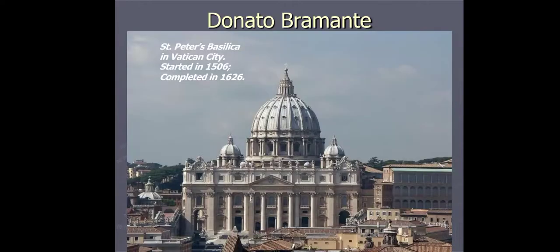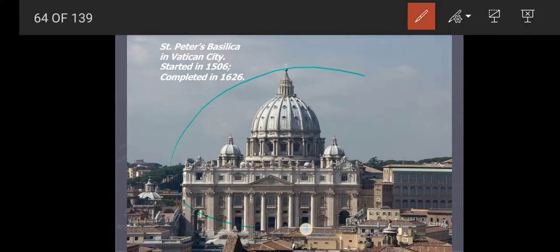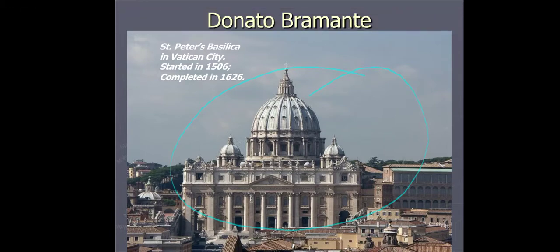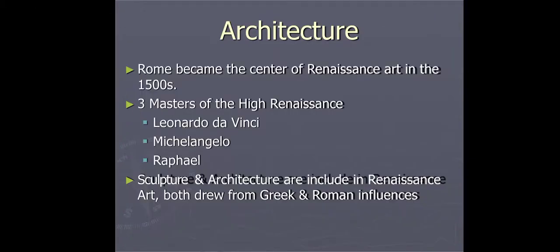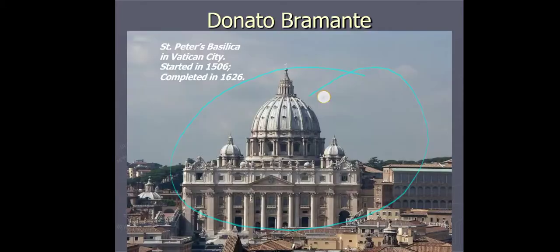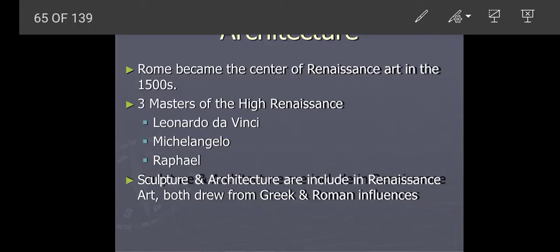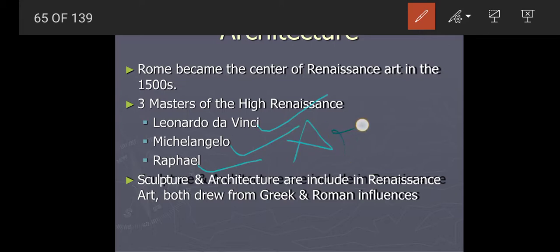Look at the picture — how beautiful it is. Architecture: Rome basically became the center of Renaissance art in the 1500s. The three masters of the High Renaissance were Leonardo da Vinci, Michelangelo, and Raphael. These are the famous artists. Sculpture and architecture are included in Renaissance art, and both drew from Greek and Roman influence.